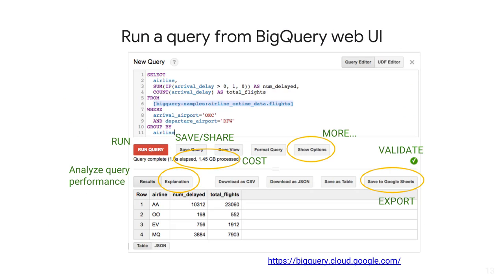To run a BigQuery query, simply visit the BigQuery web page at BigQuery.cloud.google.com, type in your SQL query, and hit Run Query. Before running a query, you can click on the Validate button to see how much data would get processed. Queries are charged based on the amount of data processed.